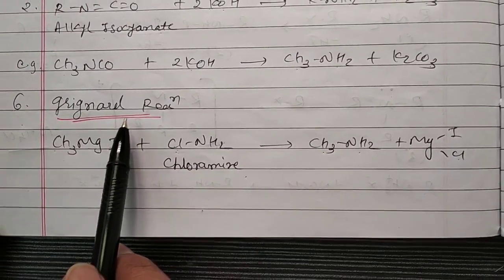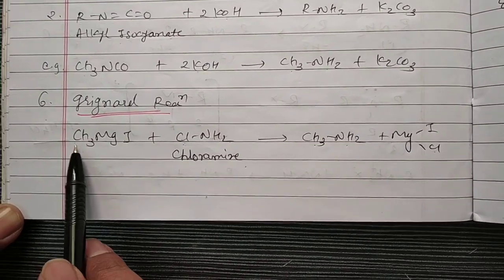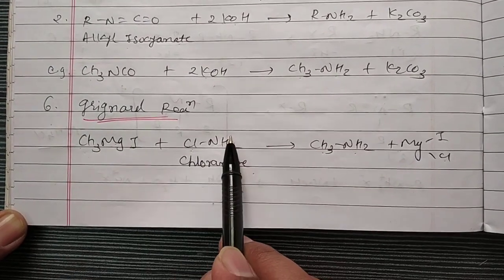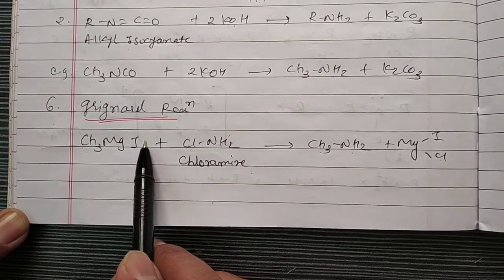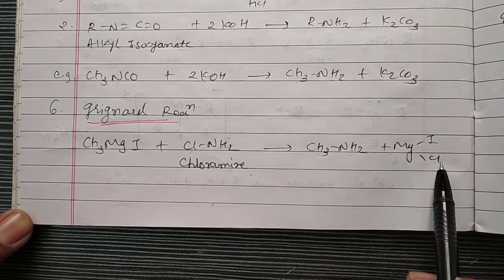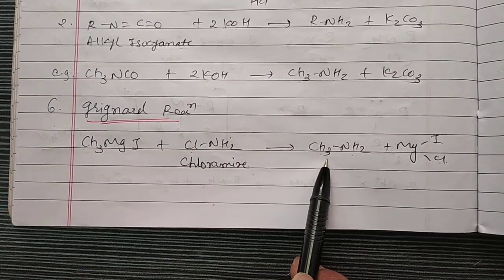See, Grignard reaction, each and every chapter you find this Grignard reaction. Once again, CH3MgI plus Cl-NH2, that is chloramine. MgICl is your byproduct and NH2 goes to here, you get Cl-NH2.